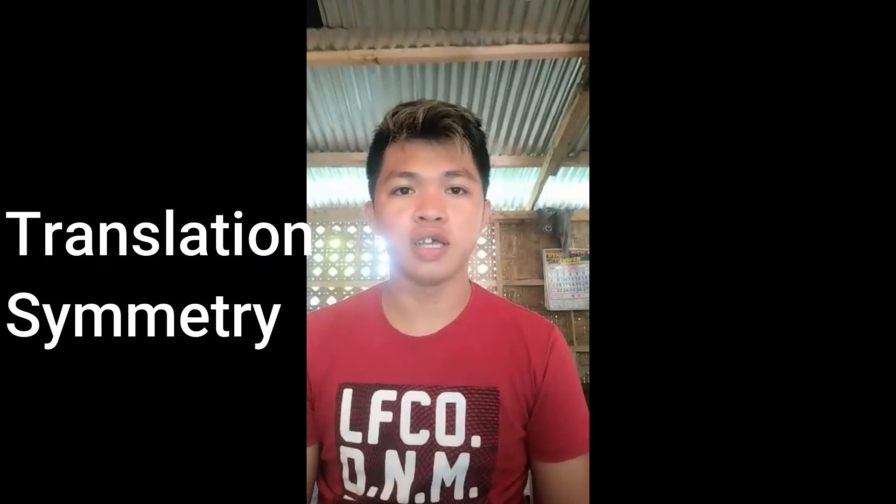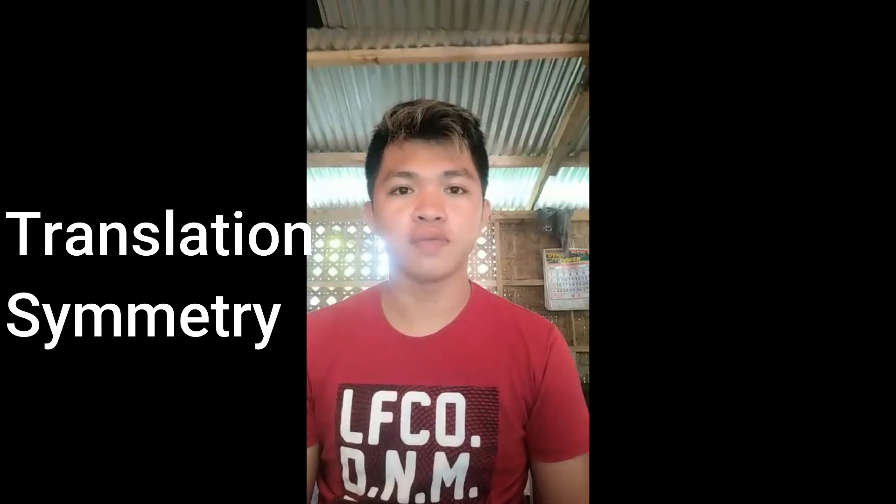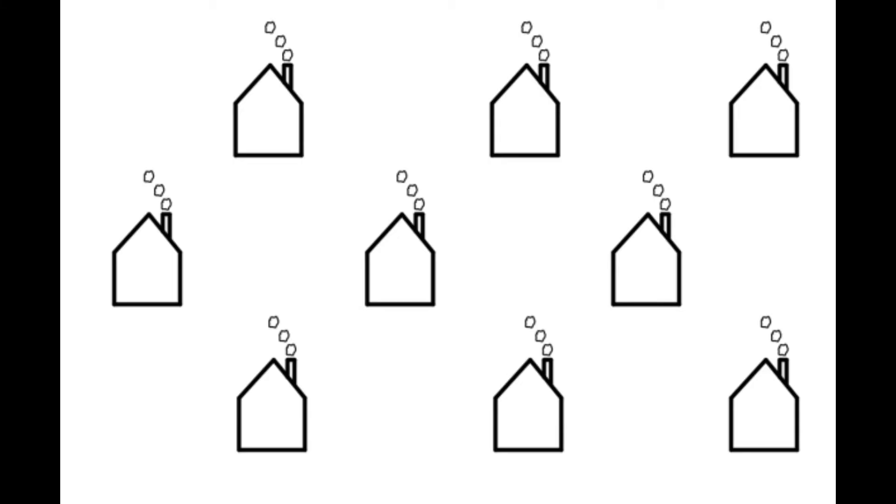And lastly, translation symmetry. It is a particular transition or movement of an object to another location without changing its pattern.